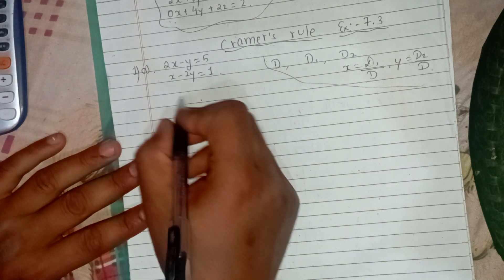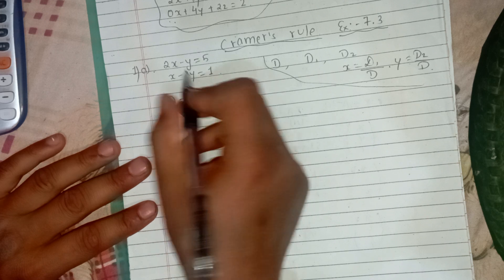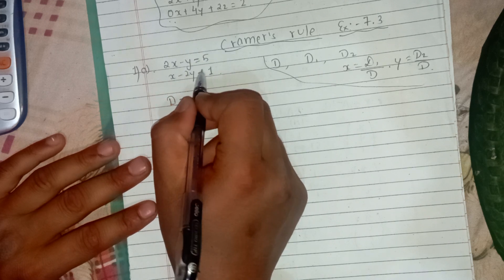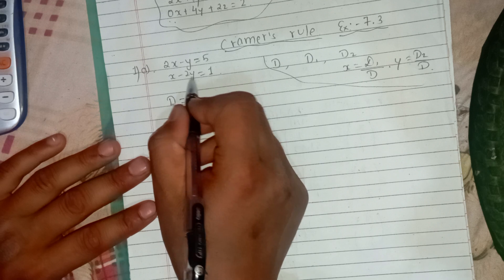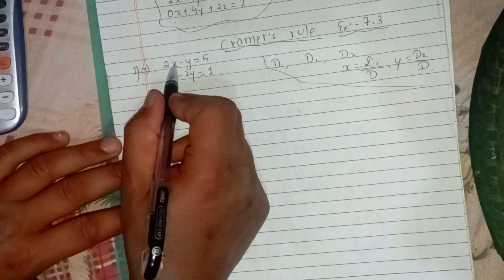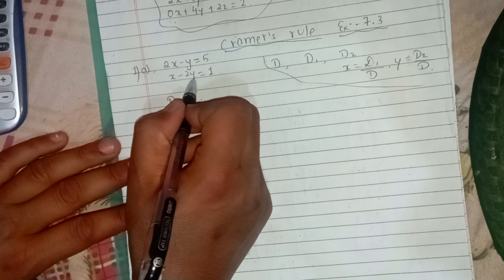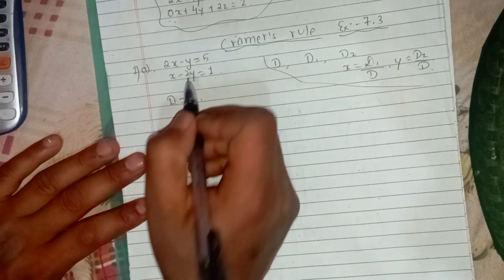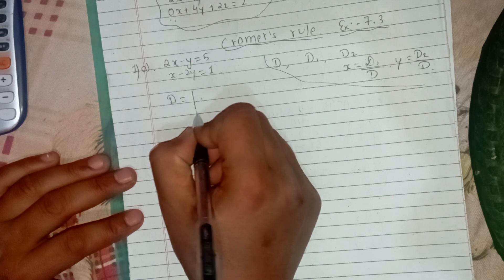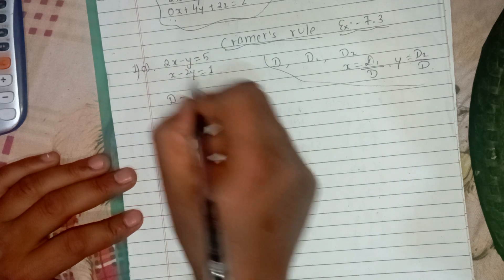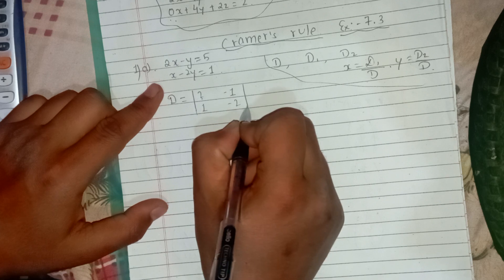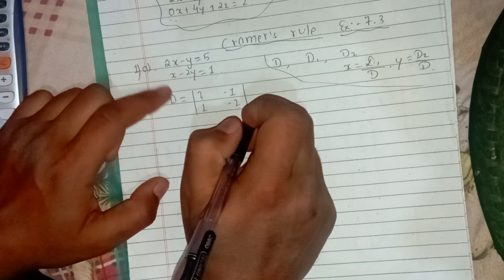D is the determinant. The determinant uses the coefficients. If we have the right side, we can make constants on one side and variables on the other side — x, y. When we make the coefficient determinant, it is 2, minus 1, and 1, minus 2.